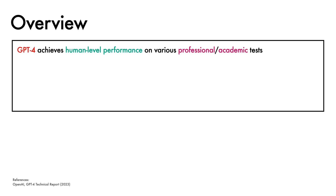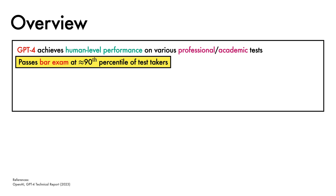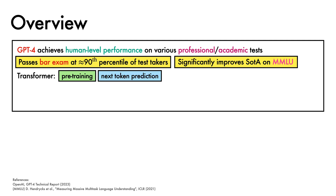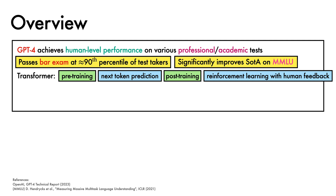The GPT-4 model achieves human-level performance on various professional and academic tests. For example, it passes the bar exam at approximately the 90th percentile of human test takers, and significantly advances the state-of-the-art on the challenging MMLU benchmark. GPT-4 is a transformer architecture trained with a large-scale pre-training stage of next-token prediction, followed by a post-training stage of reinforcement learning with human feedback.